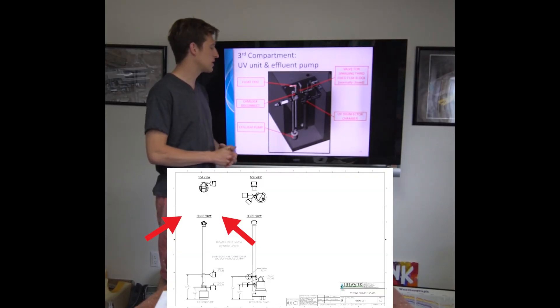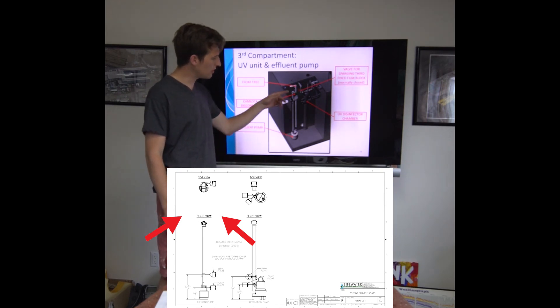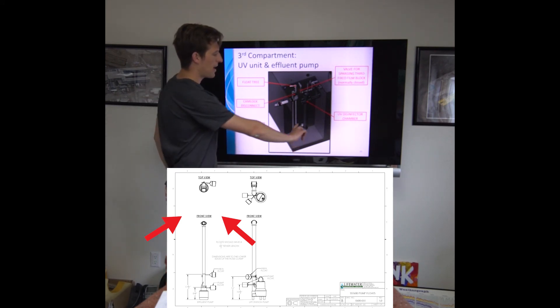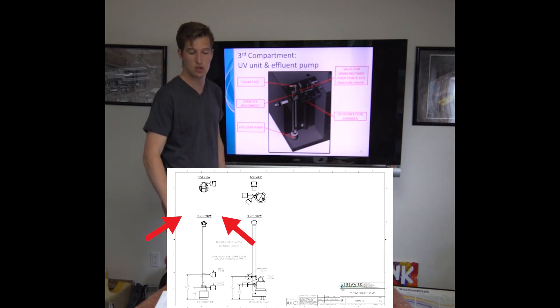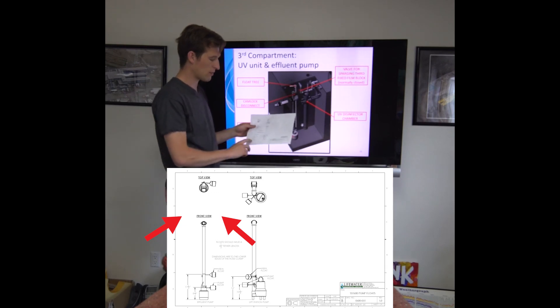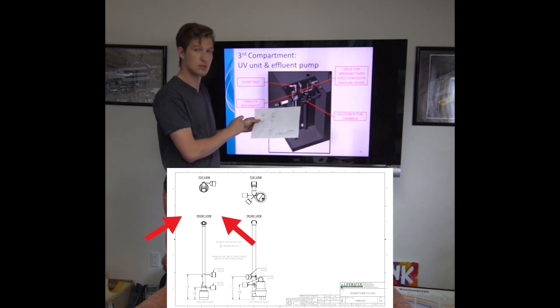So like the lift station compartment, the other compartment we have to do is the effluent compartment. So as you can see we have our effluent pump here that is connected by a cam fitting right up here. And then in the back here we have our float tree. So you are going to follow the exact same steps that we did for the lift station compartment except this piece of paper. We have the effluent pump here on the left. So in terms of distances from the bottom of the pump we are going to use these. And in terms of orientation we are going to use this top view here.